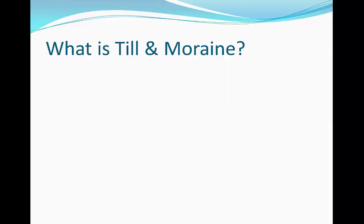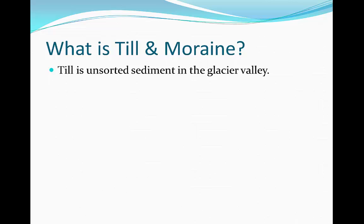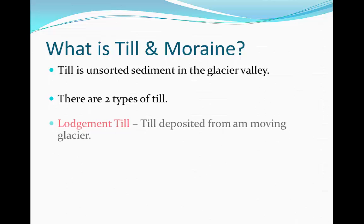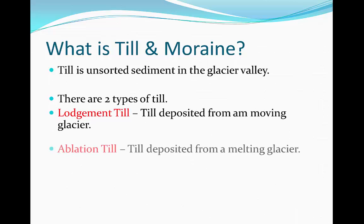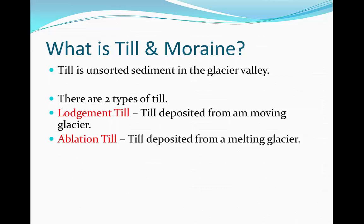What is till and moraine? Till is basically unsorted sediment that is in the glacier valley. There are two types of till: lodgment till, which is till deposited from a moving glacier, and ablation till, which is till deposited from a melting glacier.